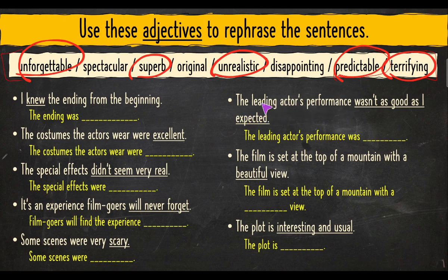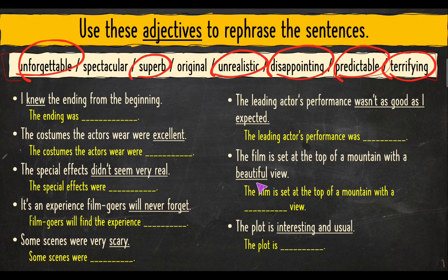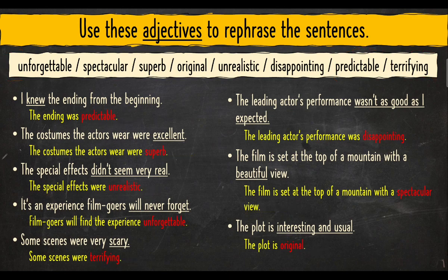Number six: 'The leading actor's performance wasn't as good as I expected' — tidaklah sebaik yang saya jangkakan — so 'the leading actor's performance was disappointing,' mengecewakan. Number seven: 'The film is set at the top of a mountain with a beautiful view' — so 'with a spectacular view,' another word for beautiful. Number eight: 'The plot is interesting and unusual' — so 'the plot is original.' You can pause and copy the answers.